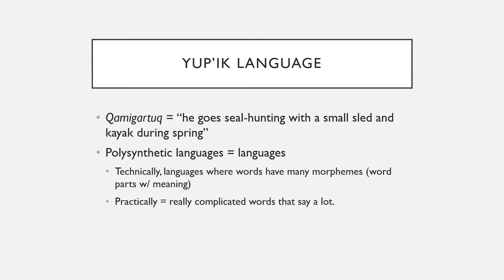The technical definition is: languages where words have many morphemes. A morpheme is a word component with meaning. For example, in the English word 'before,' you have two morphemes: 'fore' and 'be.' 'Fore' means to the front of, 'be' means proceeding — so to proceed in front of something else, essentially. English has morphemes; any language has morphemes. A polysynthetic language is one where you put a lot of morphemes together to make words.